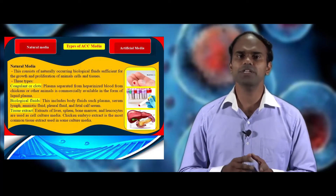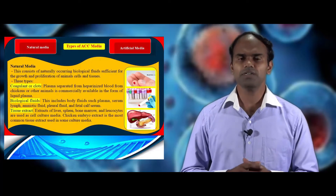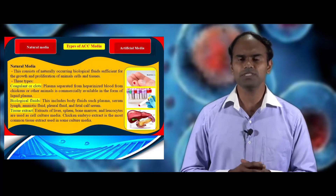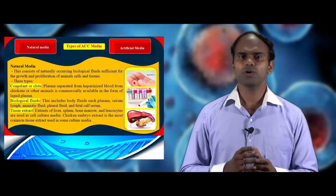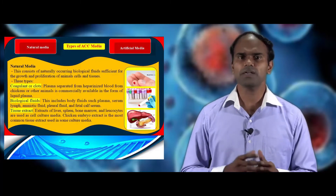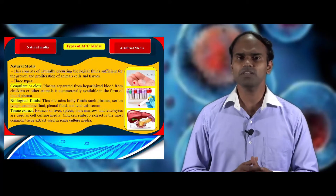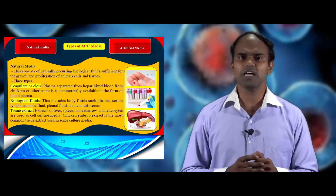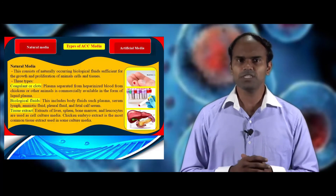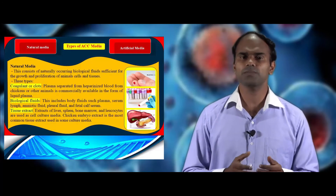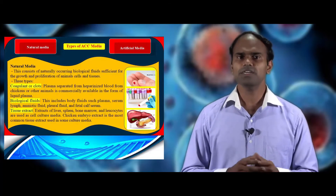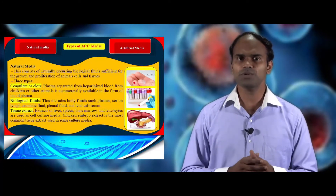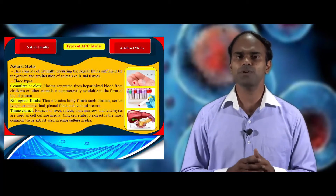Now we see about the types of animal cell culture media. There are generally two types: natural media and artificial media. Natural media is composed of naturally occurring body fluids that support the growth and proliferation of animal cells and tissues. It is of three types: coagulants or clots, tissue extracts and body fluids. Coagulants or clots are plasma separated from heparinized blood from chicken or other animals, commercially available as liquid plasma. Biological fluids include serum, plasma, amniotic fluid and pleural fluids.